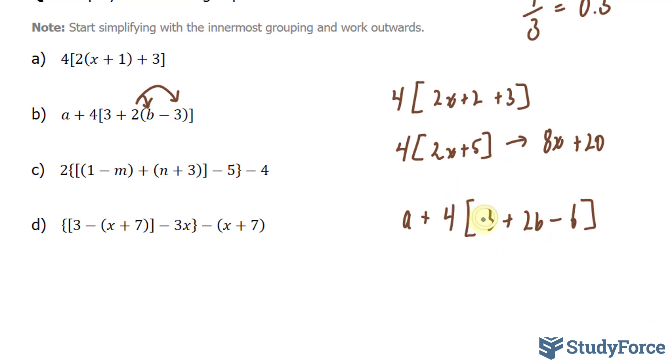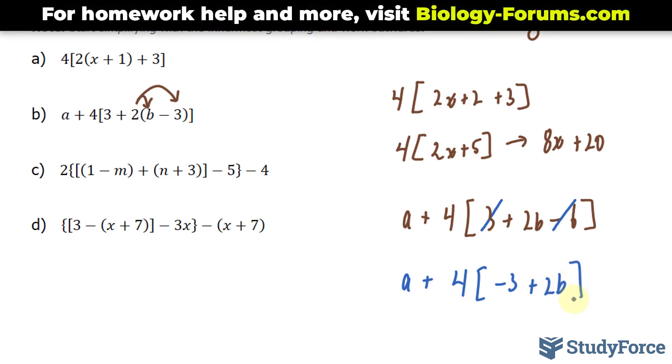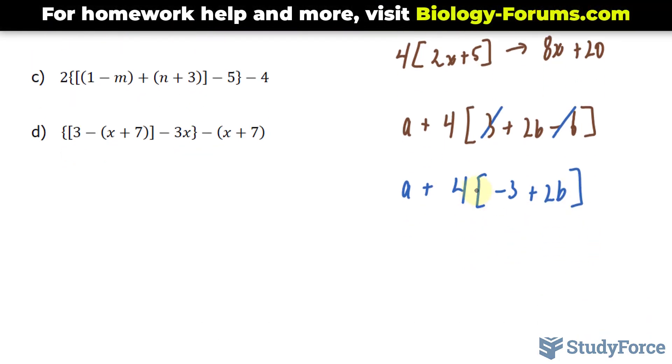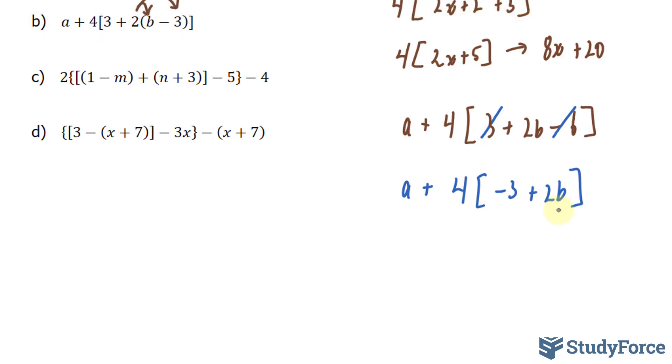Now we focus on the square brackets. 3 - 6 is -3, so we have a + 4[-3 + 2b]. We expand: 4 times -3 and 4 times 2b. This gives us a + (-12) + 8b. Cleaning this up, we end up with a + 8b - 12. That's the answer to question B.